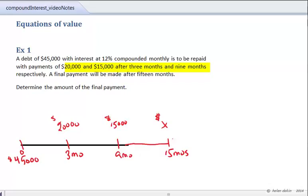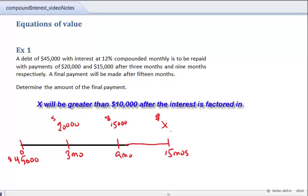So the X dollars clearly is going to be, we've got $20,000 and $15,000. That adds up to $35,000. There's a $10,000 difference between $45,000 and what we've paid off. So definitely the X dollar payment will be larger than $10,000. Why do I know that? Because I know that it's going to be paid after the due date.